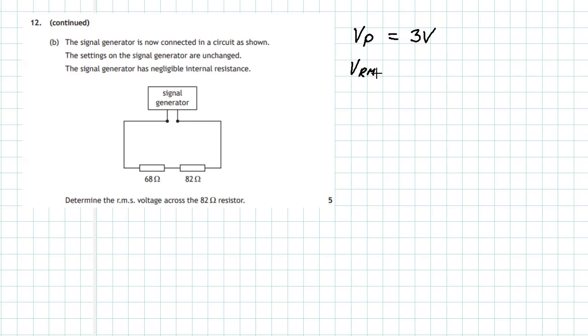Now we can work out the RMS voltage, the root mean squared voltage, from that because we know that Vrms is going to be equal to Vpeak divided by the square root of 2. So that's going to give us 3 volts divided by the square root of 2, and therefore we say that the Vrms is going to be 2.12 volts RMS - that's the average voltage through this AC circuit.